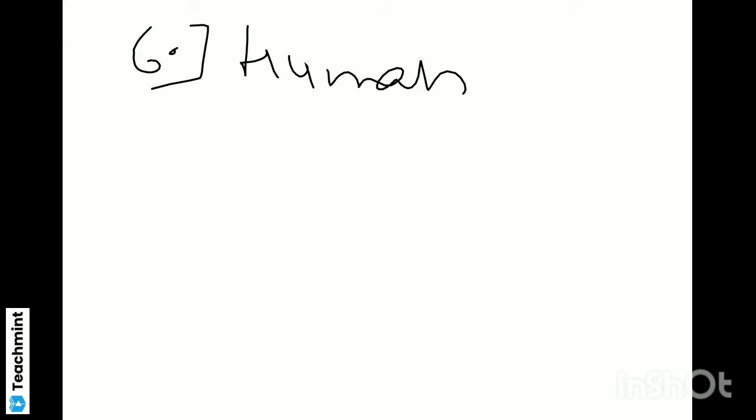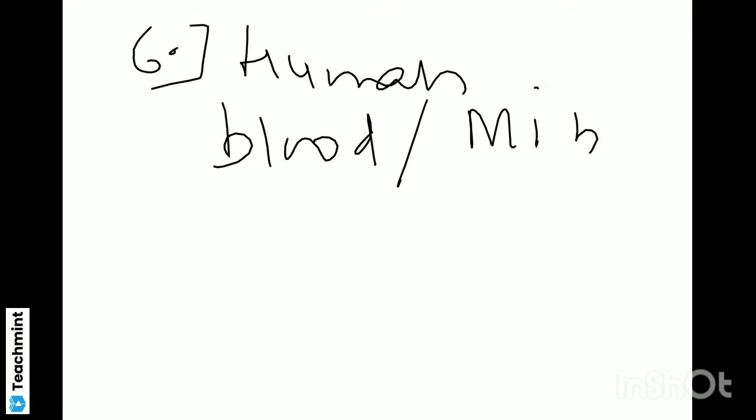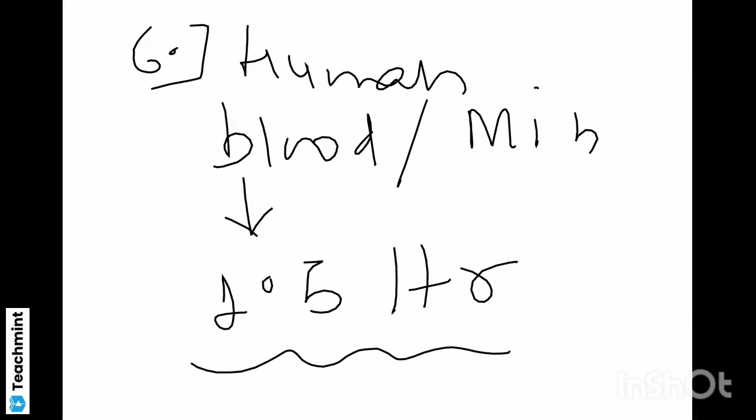Question number six is a very important question: humans mein kitna blood per minute flow hota hai? Aur iska jo answer hai, that is 1.5 liter. So, 1.5 liter blood per minute human mein flow hota hai. Remember this point — ye kaafi effective hota hai aur important hai, aur kaafi puchha jaata hai.